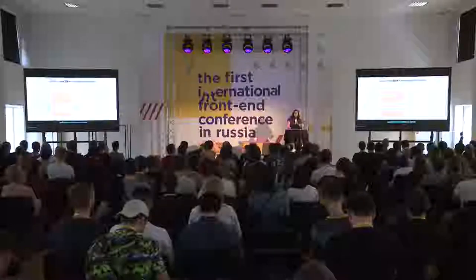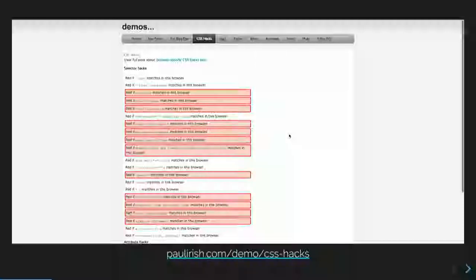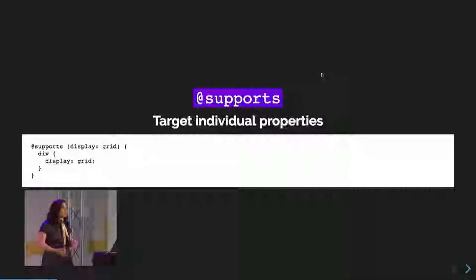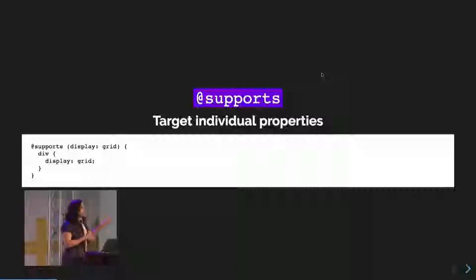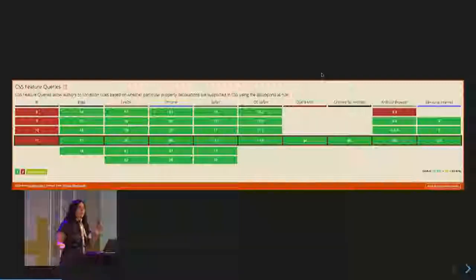Let's talk about CSS hacks very quickly. I want to show you some sites people put together to showcase these hacks — like this site by Paul Irish that people used to figure out browser compatibility. But now we have @supports. We have these queries that Brenda showed us — you write @supports display:grid, and whatever's inside that query is used by browsers that support Grid. IE11 doesn't support this, so you do need fallbacks outside that @supports query for IE11 users.